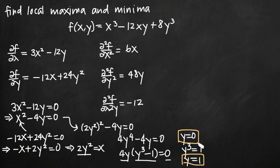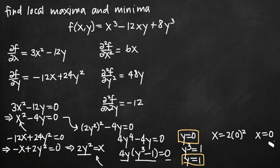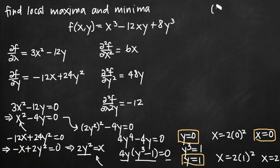The two values for y are y equals zero and y equals 1. We find corresponding x values by plugging into x equals 2y squared. For y equals zero: x equals 2 times zero squared, so x equals zero. For y equals 1: x equals 2 times 1 squared, so x equals 2. This gives us two critical points: (0, 0) and (2, 1).